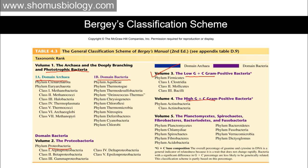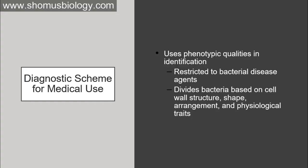Bergey's Manual is maintained in its second edition currently, though newer editions are available. It is also kept online so that you can check new bacteria based on their appearance, colony structure, shape, sizes, chemical properties, metabolic properties, pathogenic properties, and more.